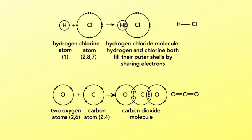Another example is hydrogen chloride (HCl): hydrogen and chlorine both fill their outer shells by sharing electrons. Another example is the carbon dioxide molecule (CO₂), where carbon shares its electrons with two oxygen atoms, forming double bonds on each side.